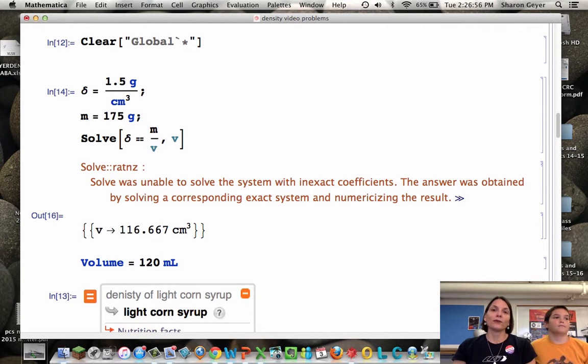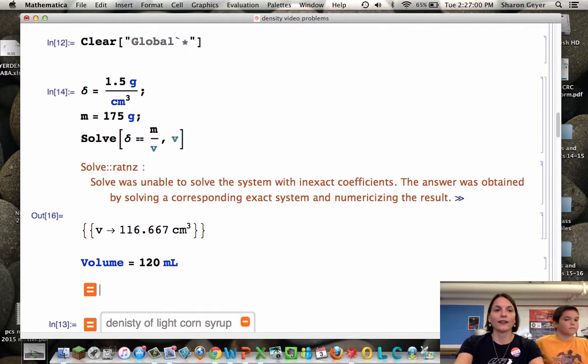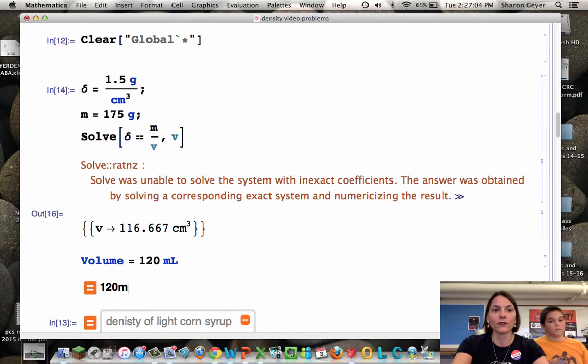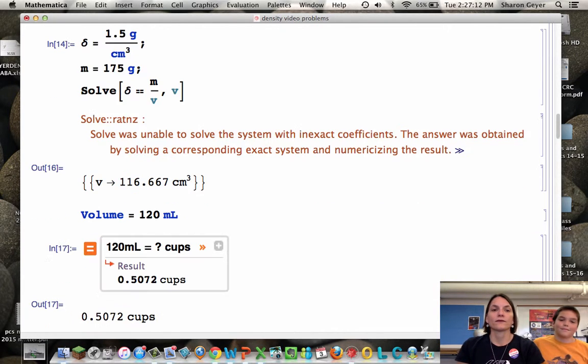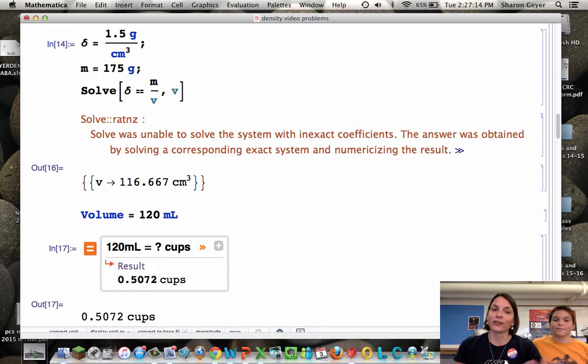Now, how many cups? Well, let's do it the easy way. Let's ask Wolfram Alpha. If we have 120 milliliters, equals, question mark, cups. Let's see if it can tell us the answer. There you go. A half a cup. 0.5072. So your mother will need a half a cup of corn syrup to have 175 grams.